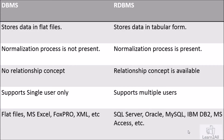Now let's check the differences. DBMS stores data in the form of flat files, while RDBMS stores data in a tabular format. Normalization is not present in DBMS, but normalization is present in RDBMS. There is no relationship concept in DBMS, while the relationship concept is present in RDBMS.